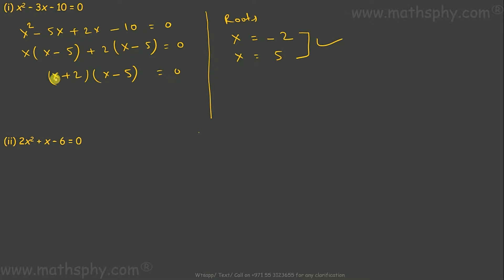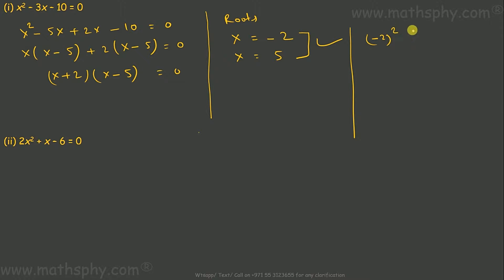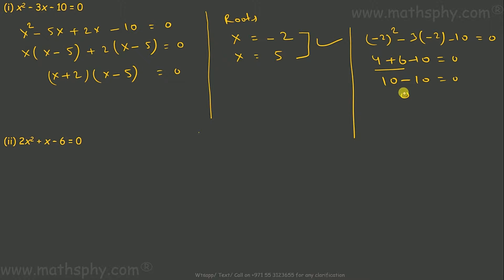If I replace x by -2, it becomes 0; 0 times anything gives 0. If I replace x by 5, this will be 5 - 5 = 0; 0 times anything gives 0. Let's do a quick check: take x = -2, so (-2)² - 3(-2) - 10 = 4 + 6 - 10 = 0. Left hand side equals zero — negative 2 is justified.